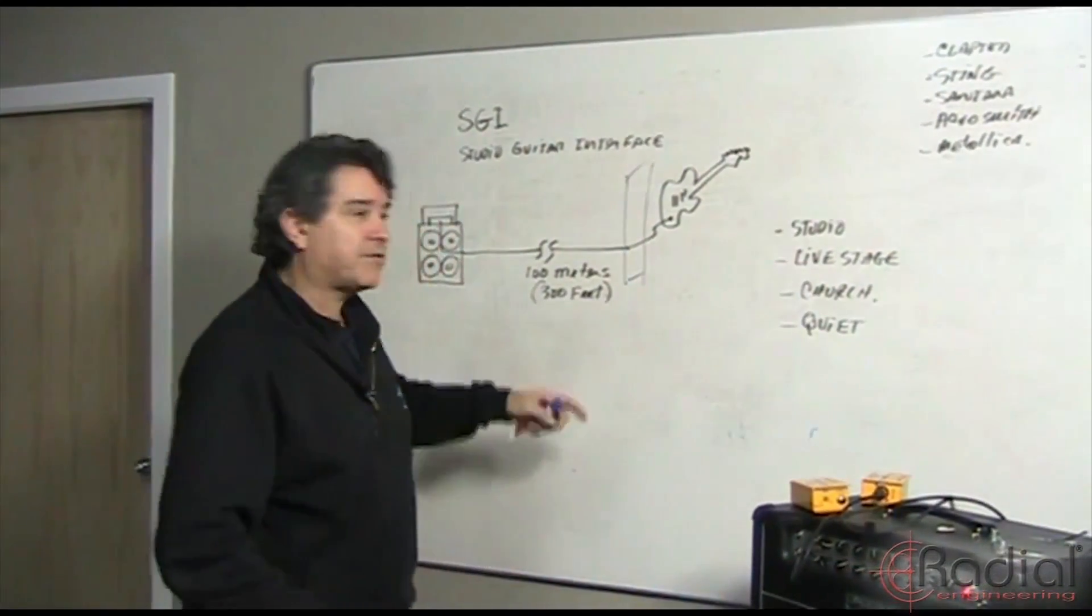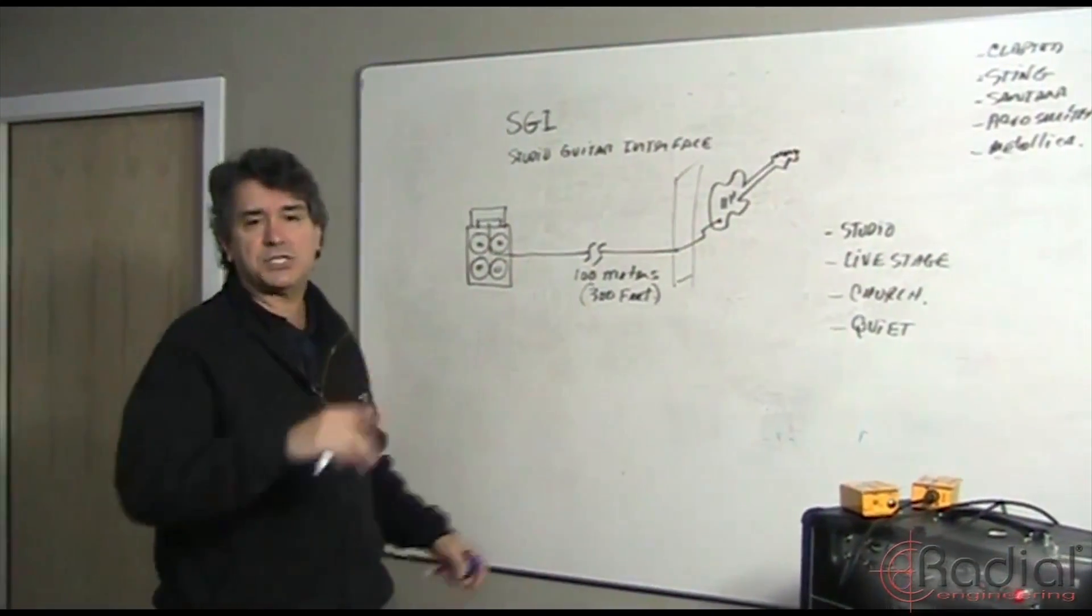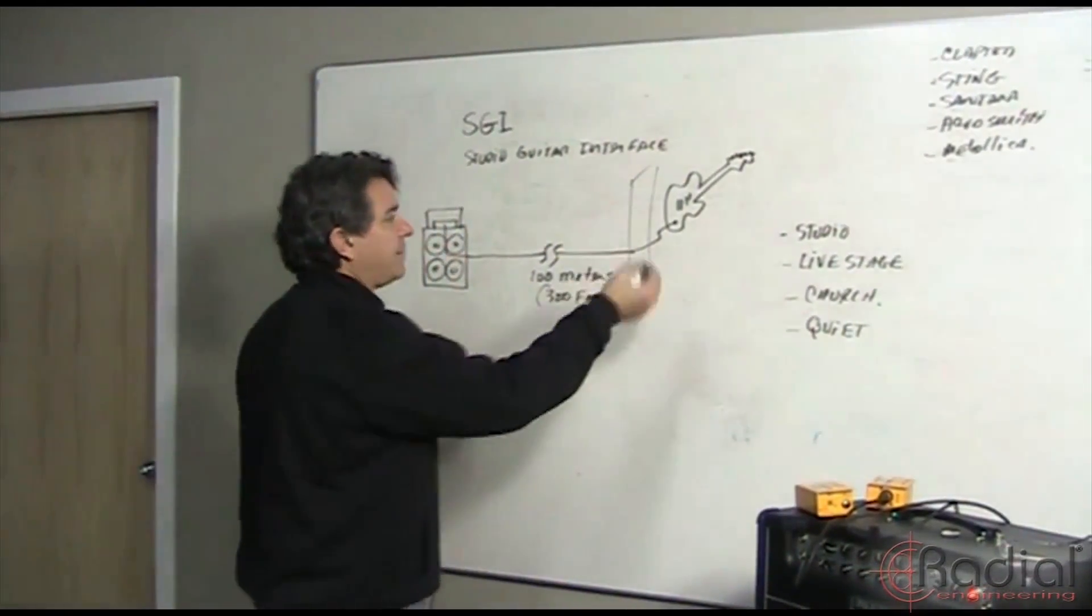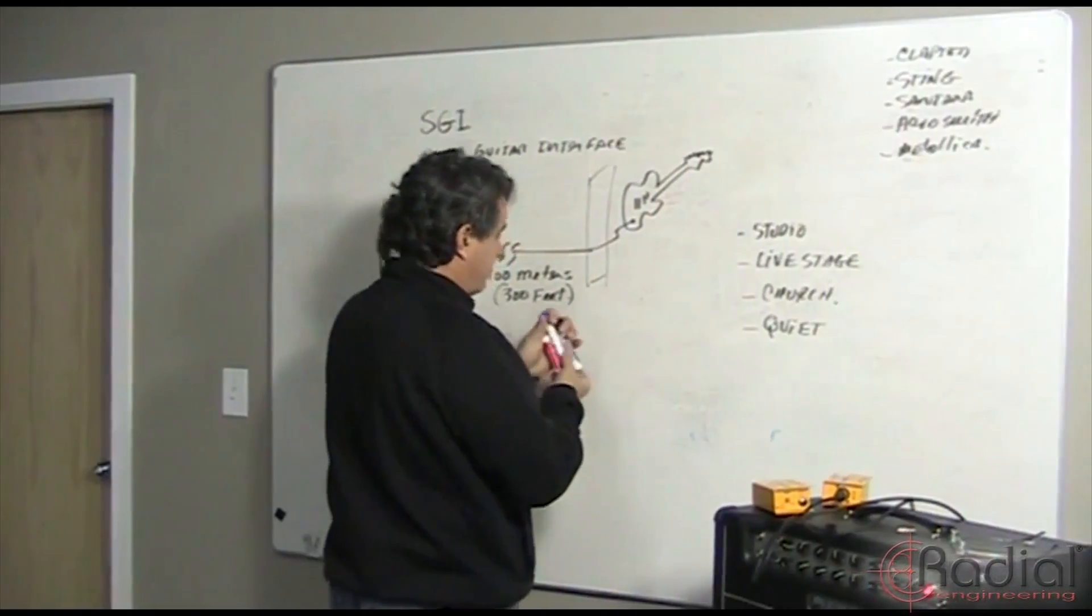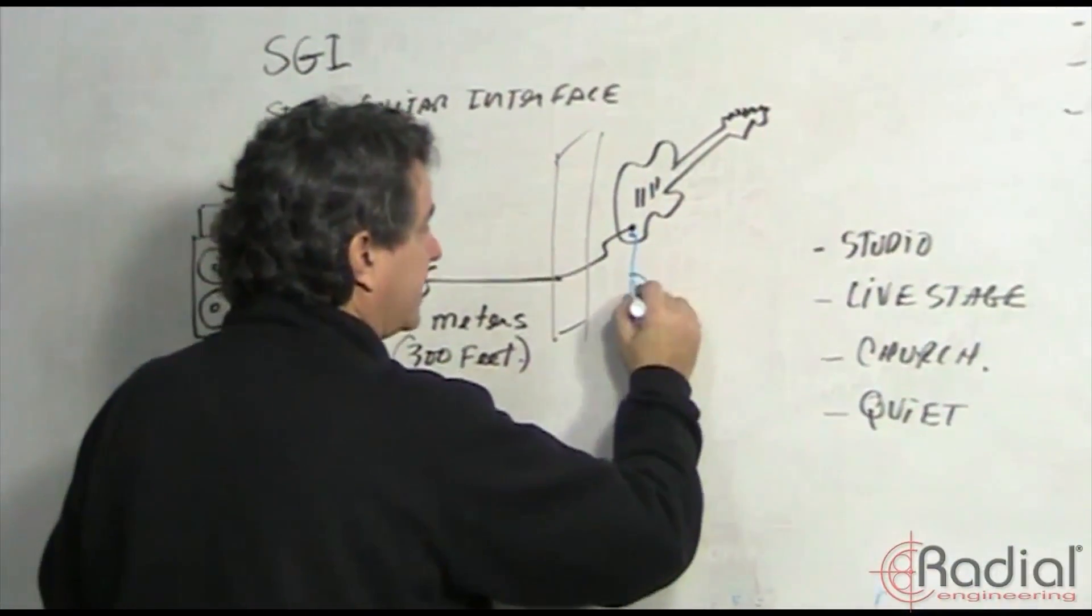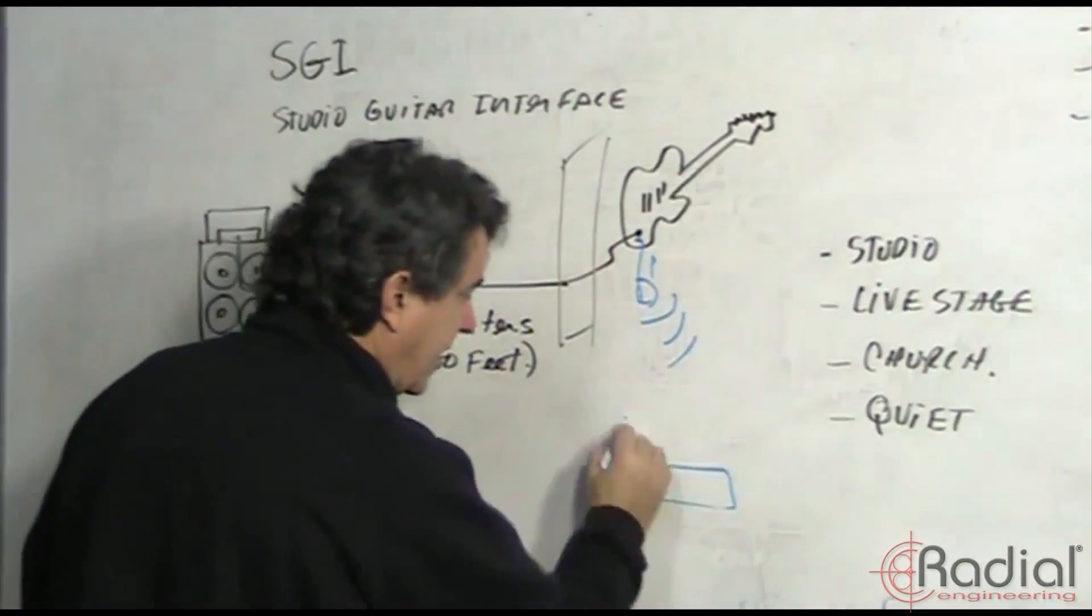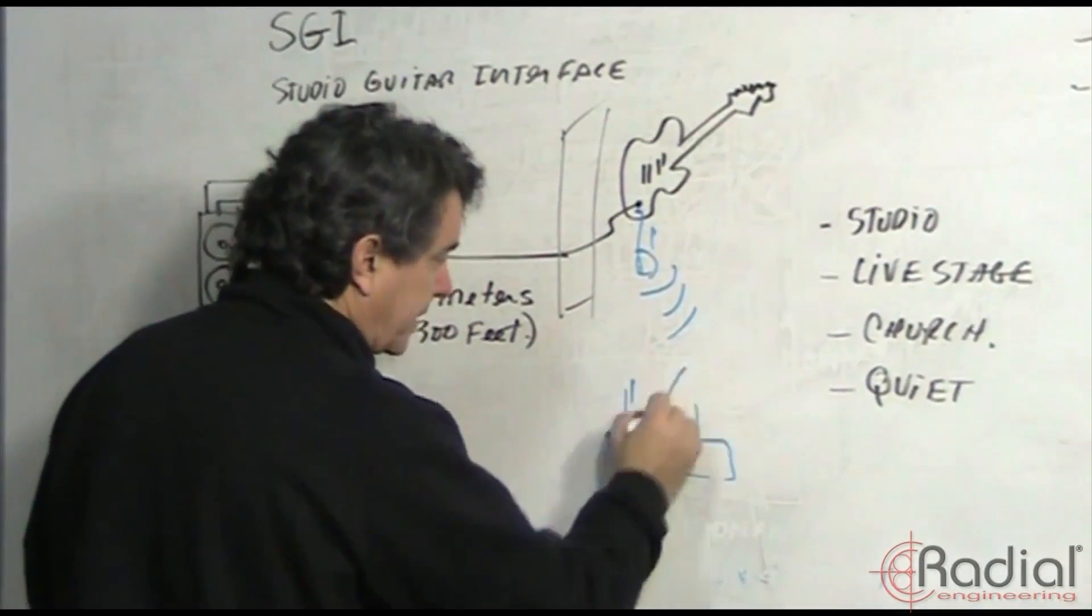On a live stage, the advantages—especially on big stages—is that you've got the cable going all over the place. A lot of times, for example, you'll have a guitarist and he'll run into a wireless system. So here's our little wireless system that'll go to a receiver.